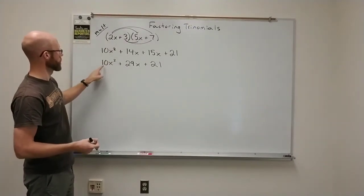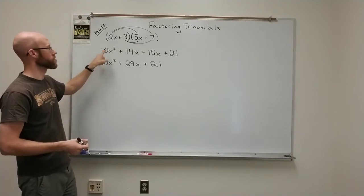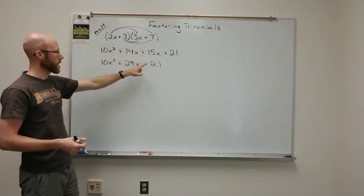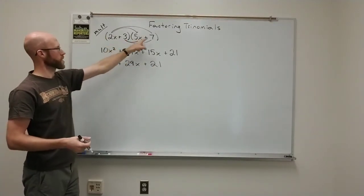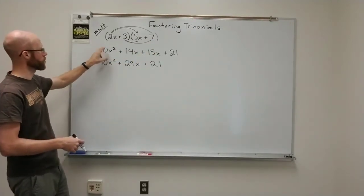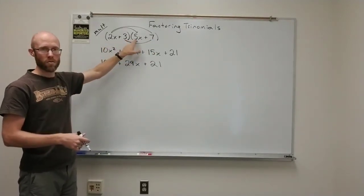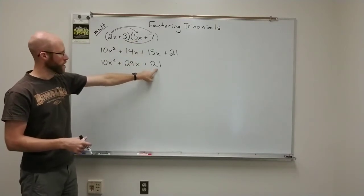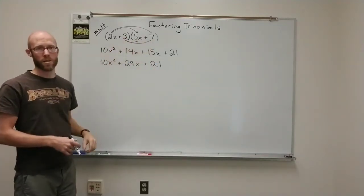You can tell that the 10 has factors of 2 and 5 and the 21 has factors of 3 and 7. So you can kind of tell that the lead coefficient comes from the product of the lead coefficients here. The constant comes from the product of the constants up here.